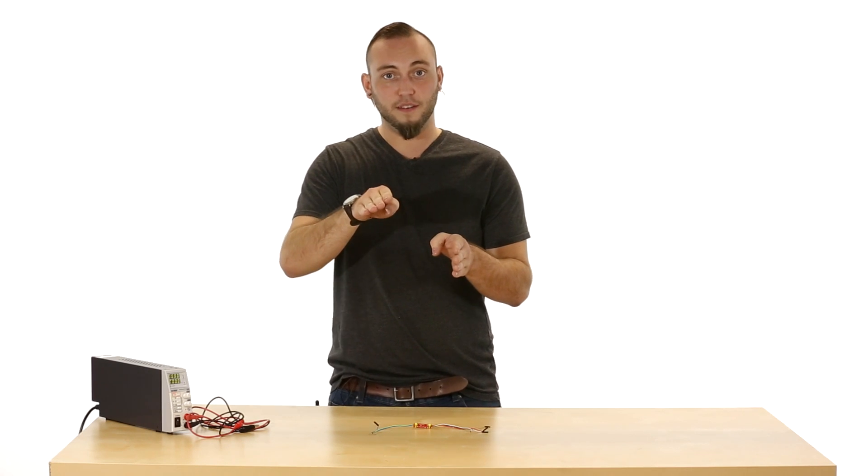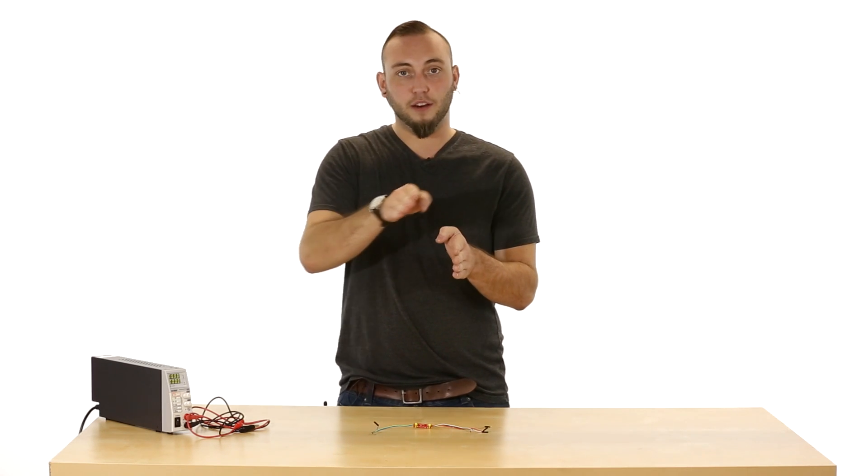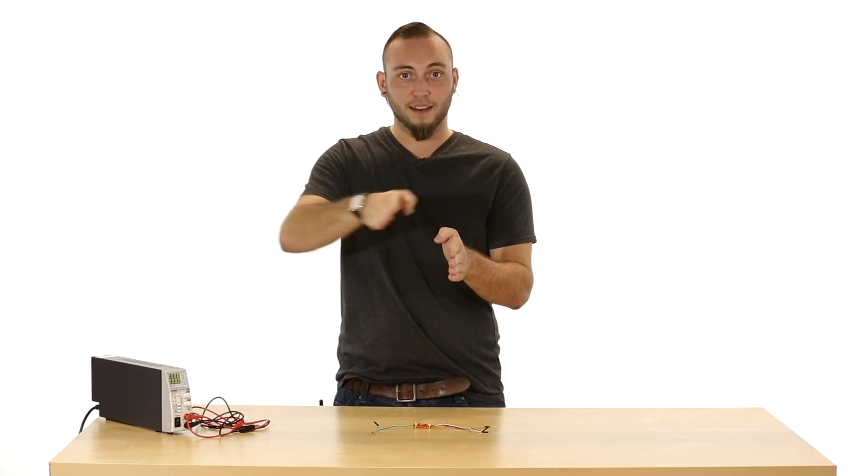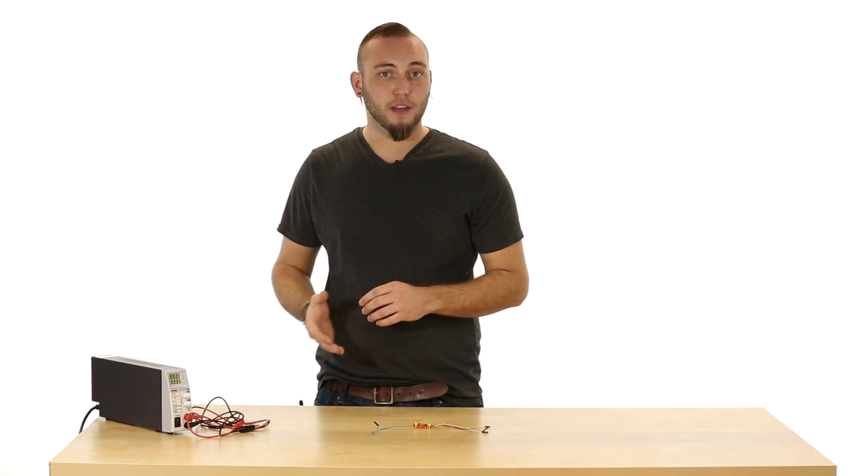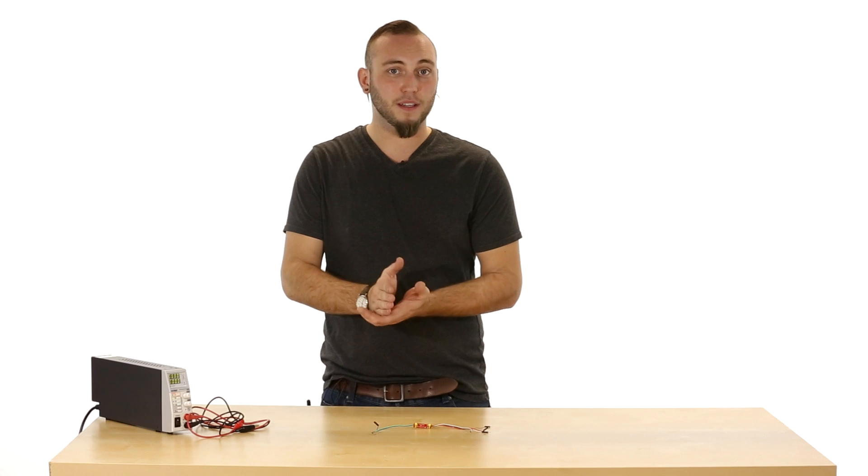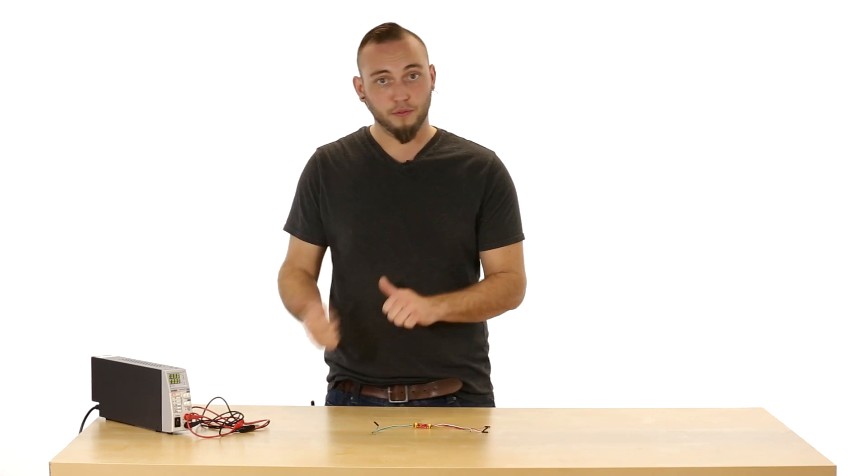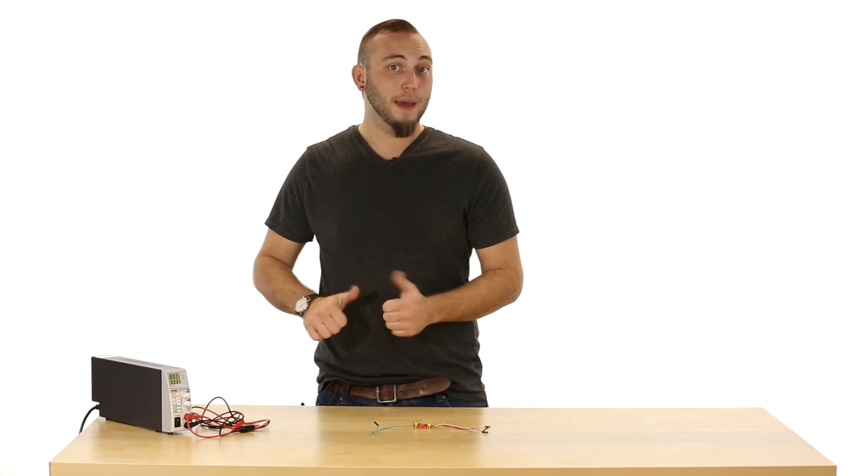So as the voltage increases across the diode, the current increases like this. The line is very steep. So when you're powering an LED, you have to be sure that you're powering it at exactly the right voltage, otherwise that current can go through the roof very quickly and burn out the device.